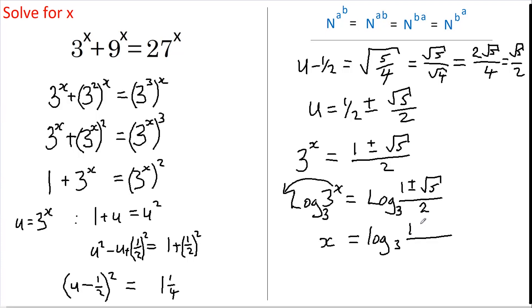Equals the log base 3 of 1 plus or minus root 5 over 2. Now if this root 5 really is negative, we end up with a negative figure on the top and a negative figure overall, and you cannot have the log of a negative number. So this negative is wrong. So the answer is x equals log base 3 of 1 plus root 5 over 2.